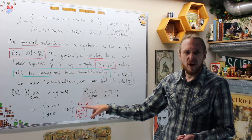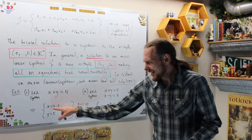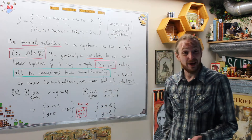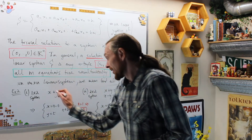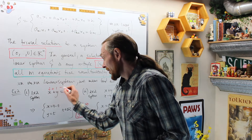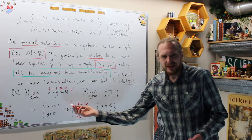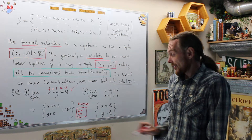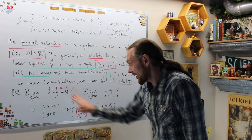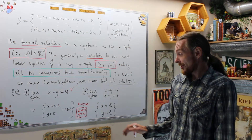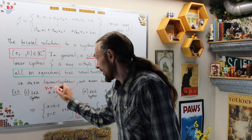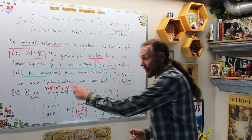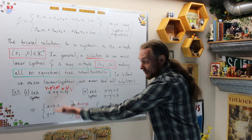Let's pick t equals one for simplicity. That means x equals four minus one, which is three, and y equals one. So we get an ordered pair (3, 1) — check: three plus one is four. If we pick t equals pi, then x is four minus pi and y is pi, and four minus pi plus pi cancels to give four. Any real number works.